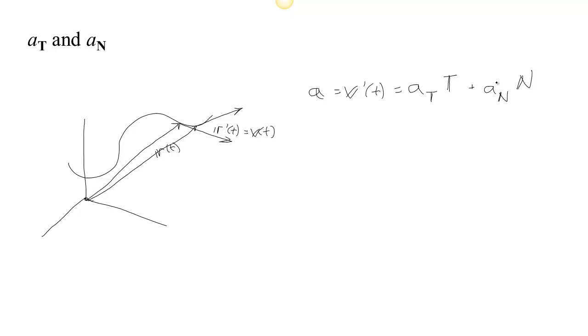It's perpendicular to the curve, and this is how strongly we are turning. So we'll see that the acceleration can be broken up into two components: a tangential component and a normal component.